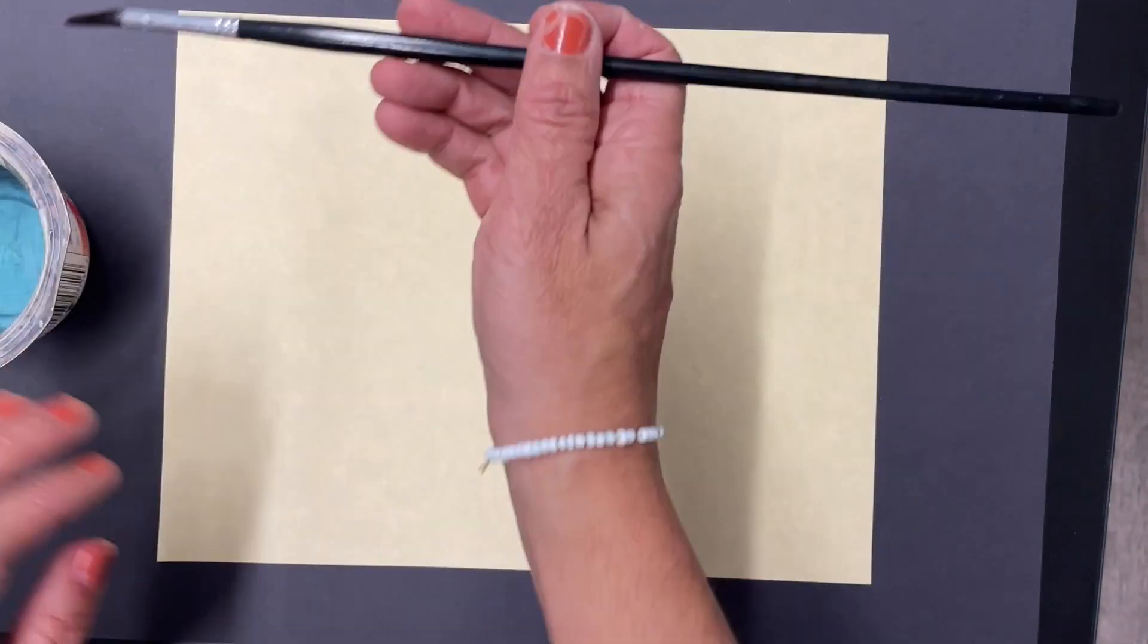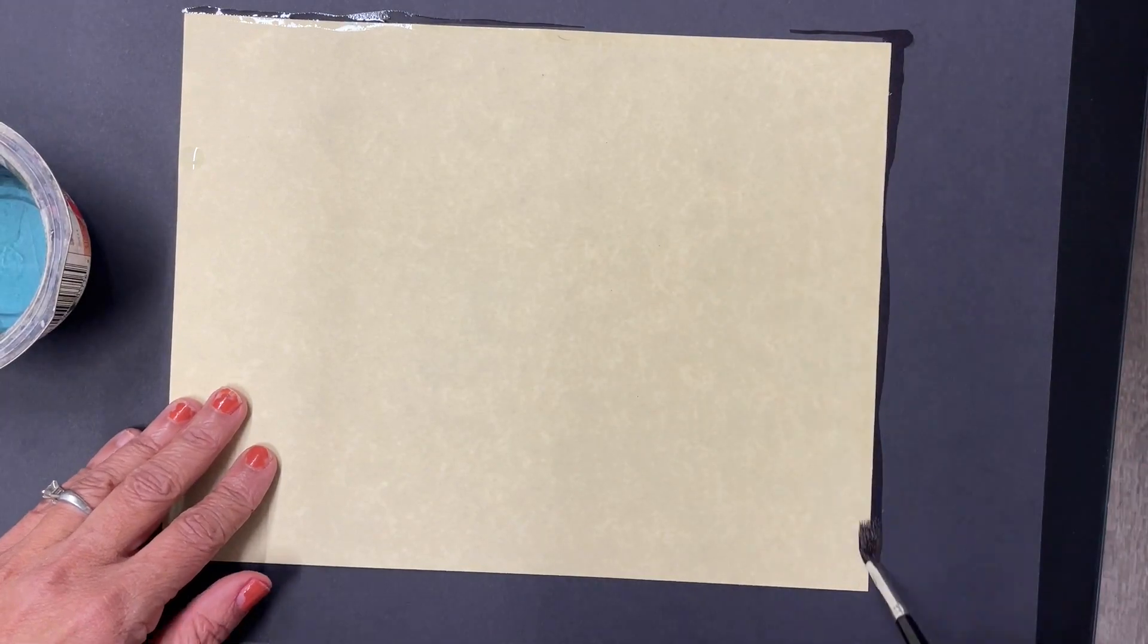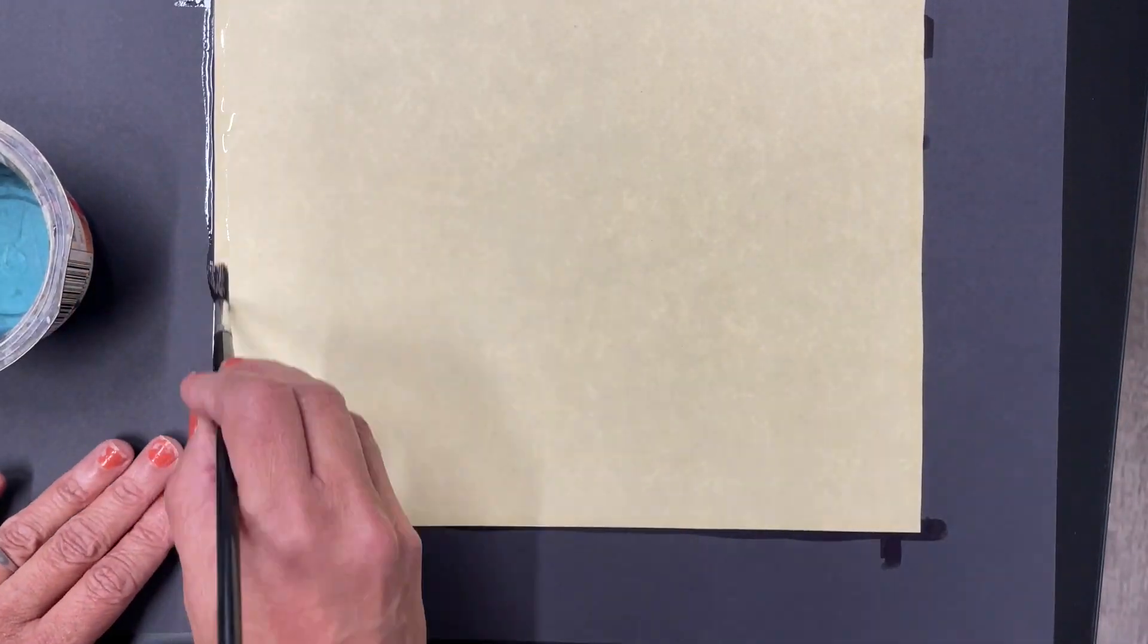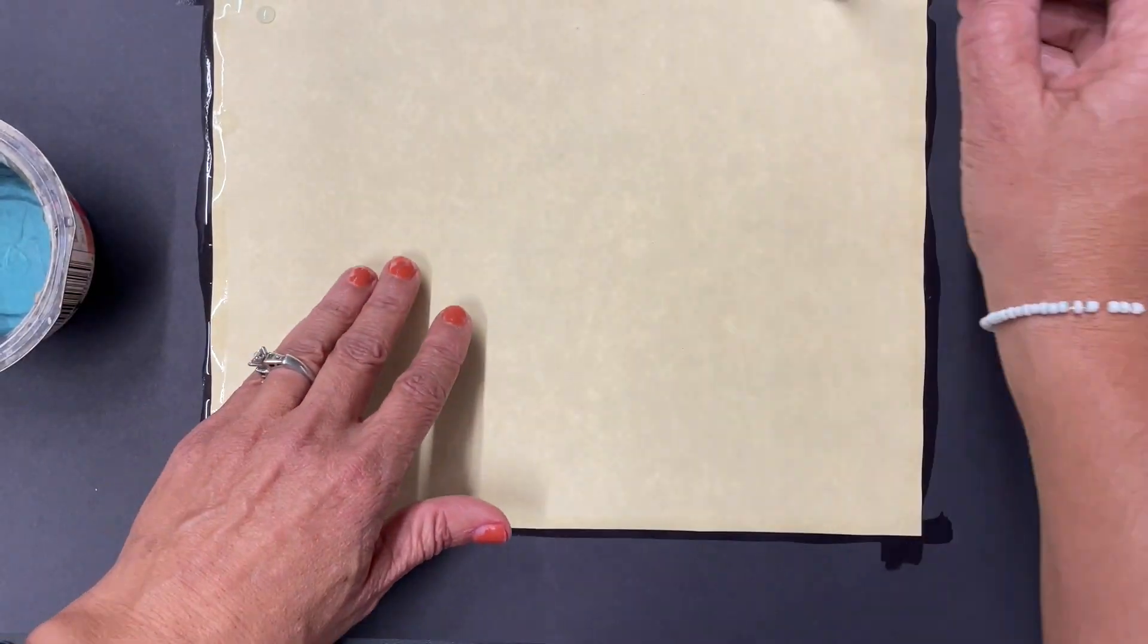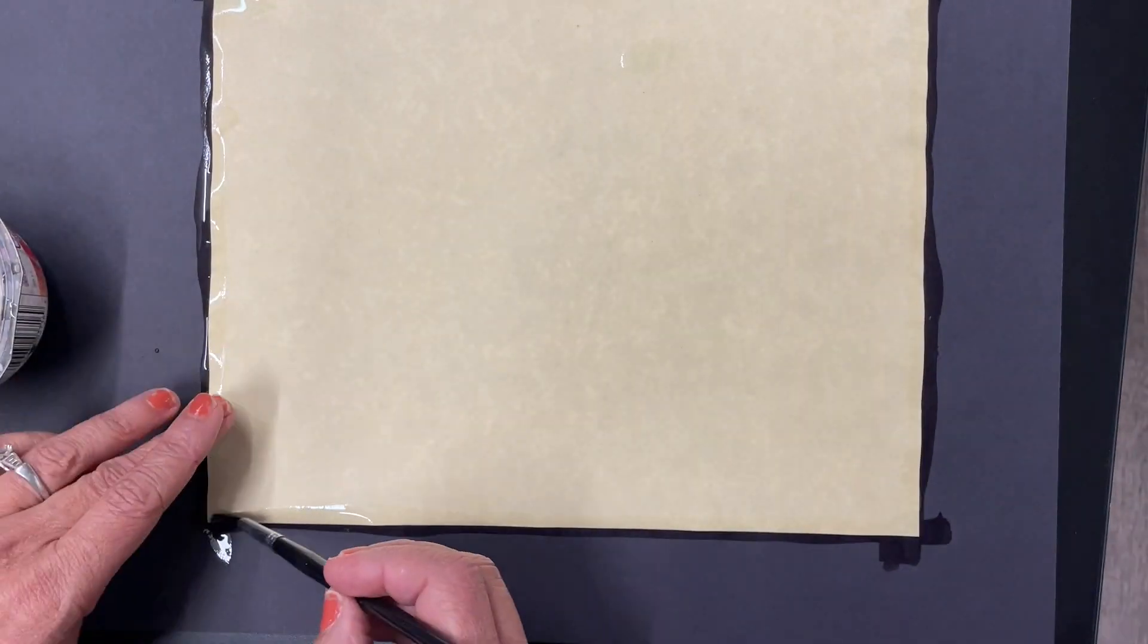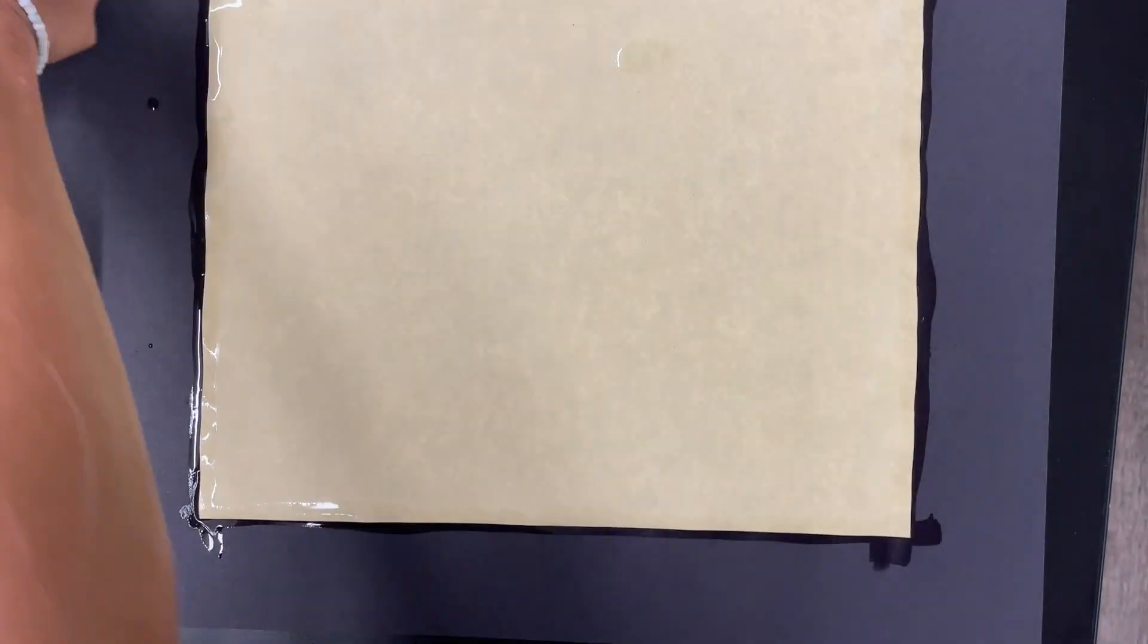What you'll do is paint the edges with water, each time dipping your brush back into the water and painting the edge. You're going to go around all four edges three times total. We want to get those nice and wet.